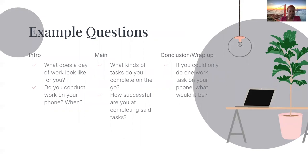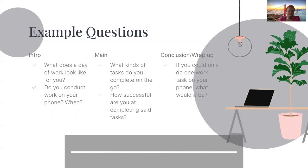For the main script, you might ask: 'What kinds of tasks do you complete on the go?' and 'How successful are you at completing those tasks?' This gets into the meat of answering your research question — digging into what the user is doing with their phone as it pertains to work. Then to conclude, you might ask something around idea generation, like: 'If you could only do one work task on your phone, what would it be?' This is a preference question that clues you into the priorities of your customer, but it's preferential, so you want to focus more on the content of the main section.